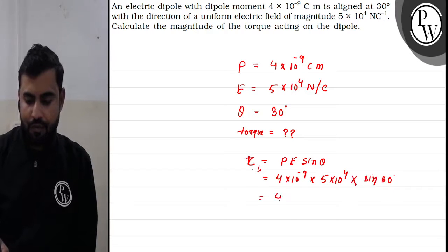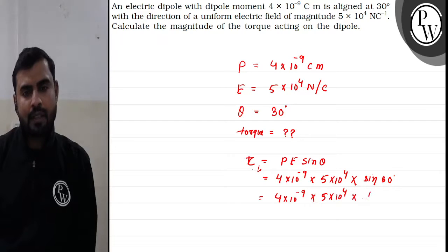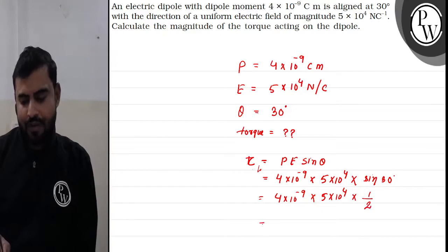So this will be 4×10^-9 × 5×10^4, and the value of sin 30 degrees is 1/2. When we calculate this, we get 10^-4 newton meter.